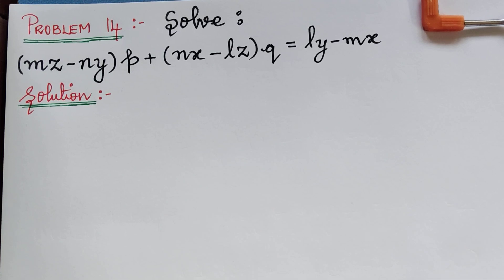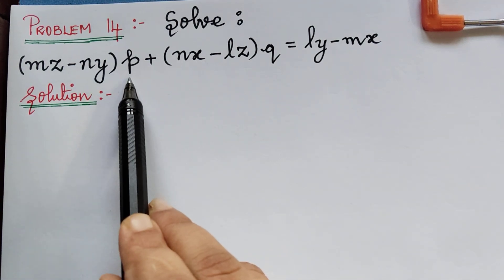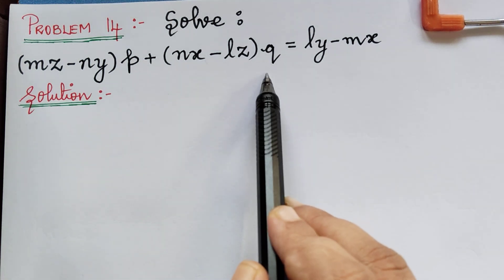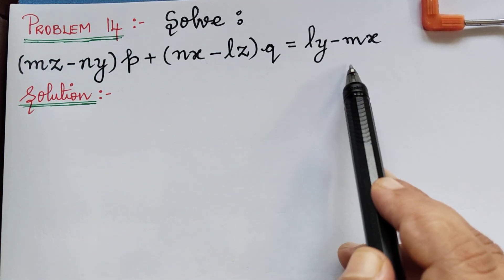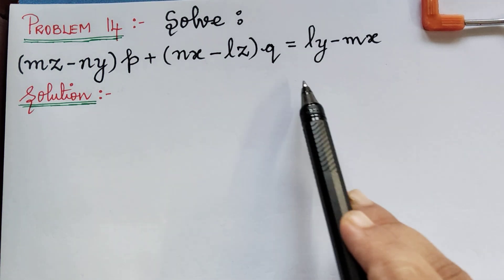Dear students, under the topic Lagrange's partial differential equations, we are solving problems using the method of multipliers. Here we have a very significant problem from the examination point of view. The question is: solve (mz minus ny)p plus (nx minus lz)q equals ly minus mx. We understand that this is of Lagrange's type.